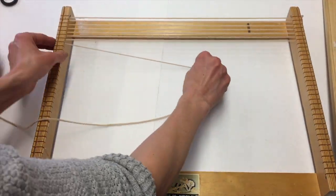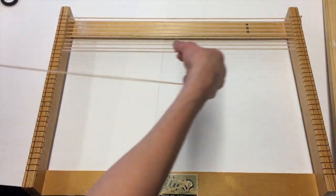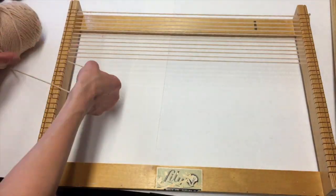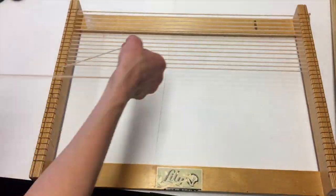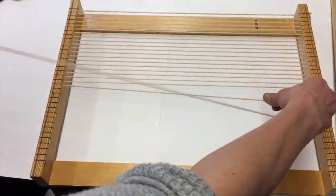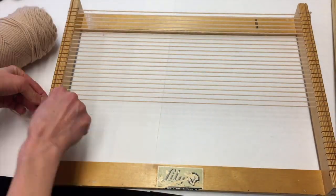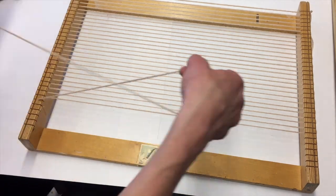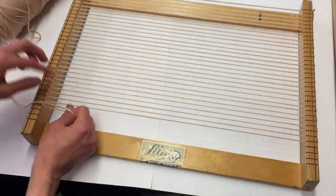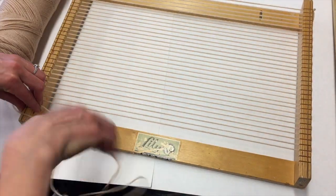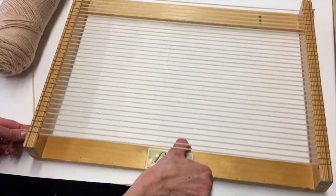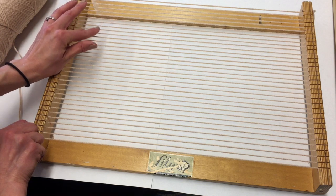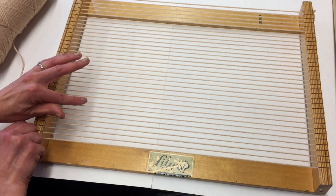Make sure there's not a lot of slack, otherwise it will be very difficult to weave later. After your loom is completely full, go ahead and count your number of warp strings. We need an even number of strings here.